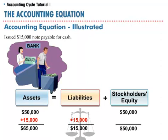Campus Pizza issued a note payable to a bank in exchange for $15,000 in cash. The company's assets would increase by $15,000 due to the value of the cash, and liabilities would also increase by $15,000. The equation would stay in balance.